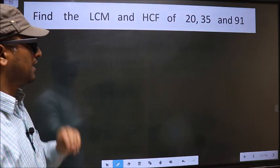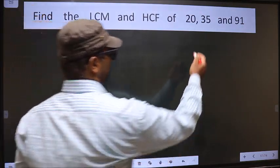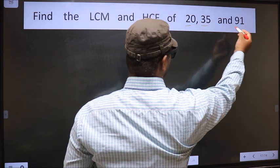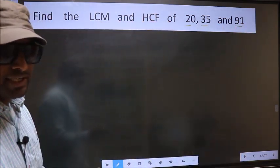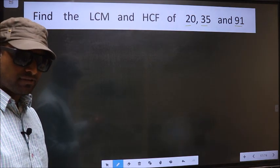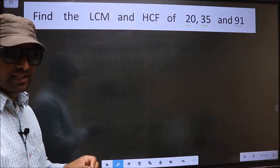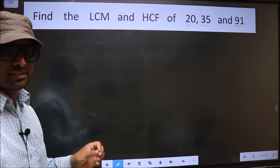Find the LCM and HCF of 20, 35 and 91. To find the HCF and LCM, first we should do the prime factorization of each number separately.